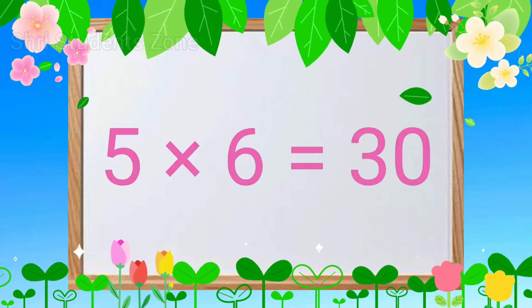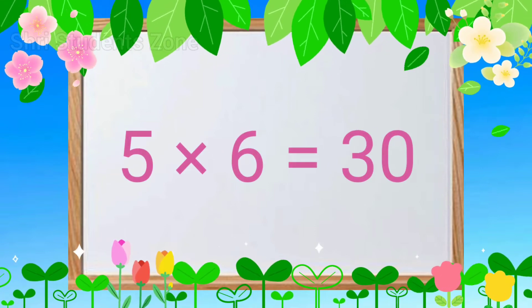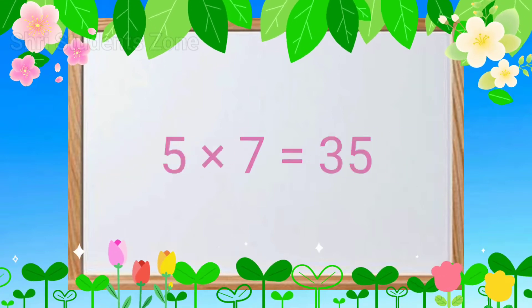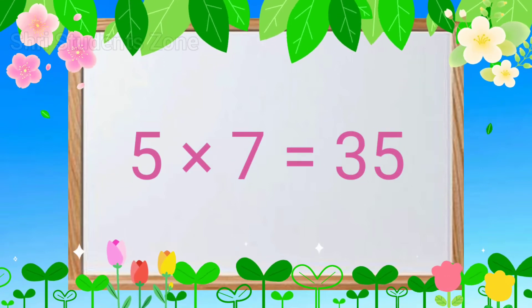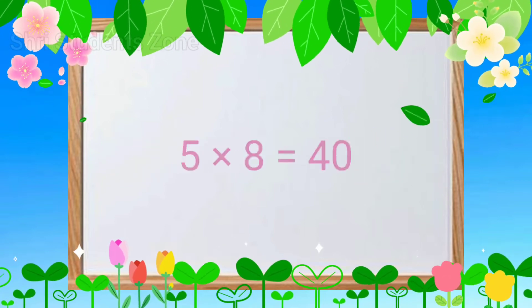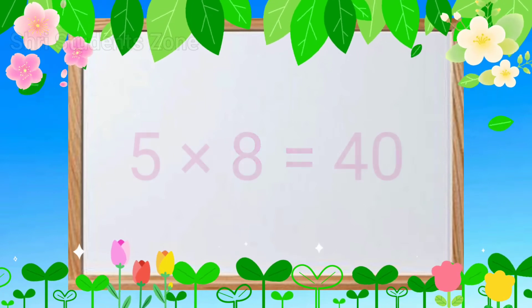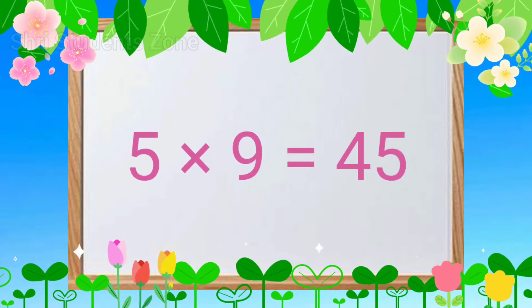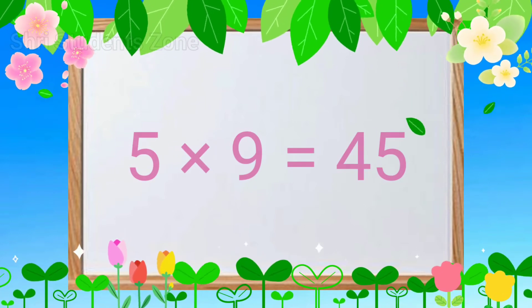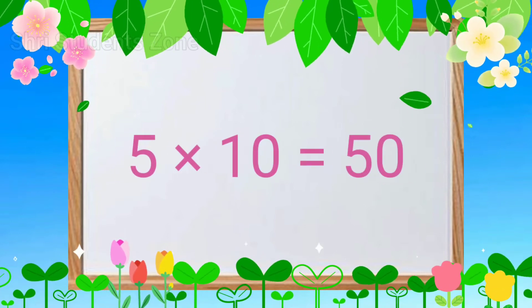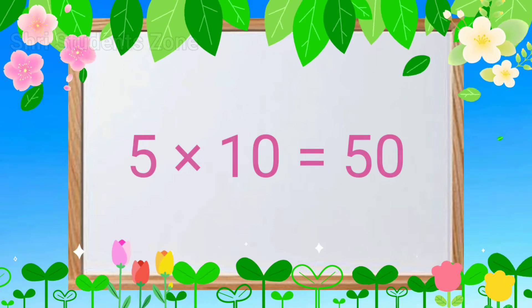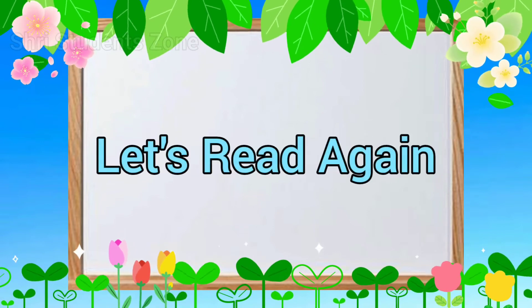5-6s are 30, 5-7s are 35, 5-8s are 40, 5-9s are 45, 5-10s are 50. Let's read again.